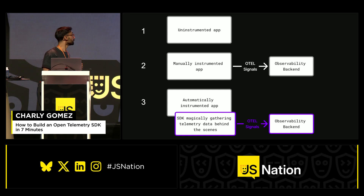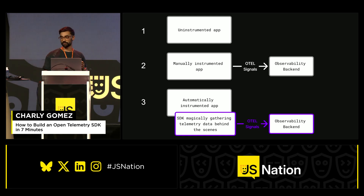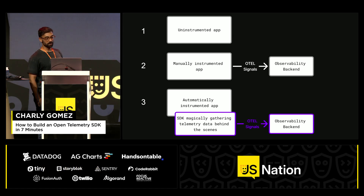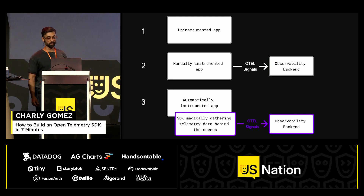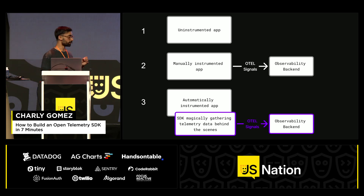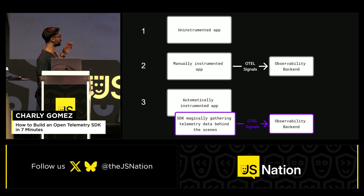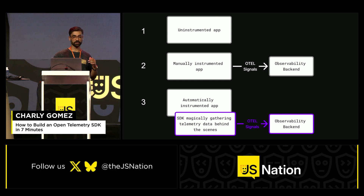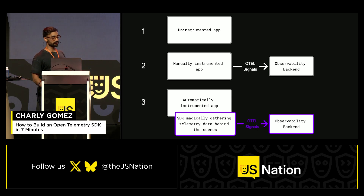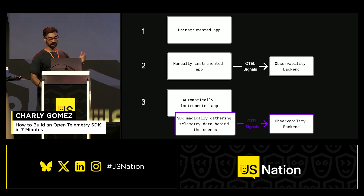Let's look at three examples. The first would be an uninstrumented app — basically a black box because it doesn't emit anything. Second would be a manually instrumented app, where you, the developer, decide which signals you want to send to the observability backend. And third is the sweet spot: an automatically instrumented app, meaning you just write the application code and some library or SDK magically gathers the telemetry data behind the scenes and sends it to your backend.